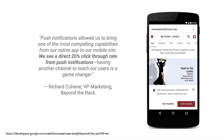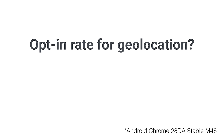Notifications and other APIs like it allow developers to create new levels of engagement. But in order for users to actually take advantage of these features, they have to say yes first — they have to give you permission. So to set a baseline: what do you think the opt-in rate for geolocation on the web is? This number is specifically Chrome for Android, 28 days on a certain milestone — of every time we show the info bar, what percentage say yes?